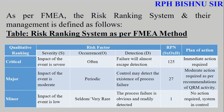For the calculation: if Severity is 5, Occurrence is 5, and Detection is 5, the RPN = 125, which is critical. If all values are 3, RPN = 27, which is major. If all values are 1, RPN = 1, which is minor. If critical, immediate action is required. If major, moderate action is required as per QRM recommendations. If minor, no action is required — the system is in control.